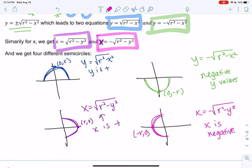So these are just four different semicircles we might make. So positive y is upper, right? Negative y is lower. Positive x is the right side, and negative x is the left side.